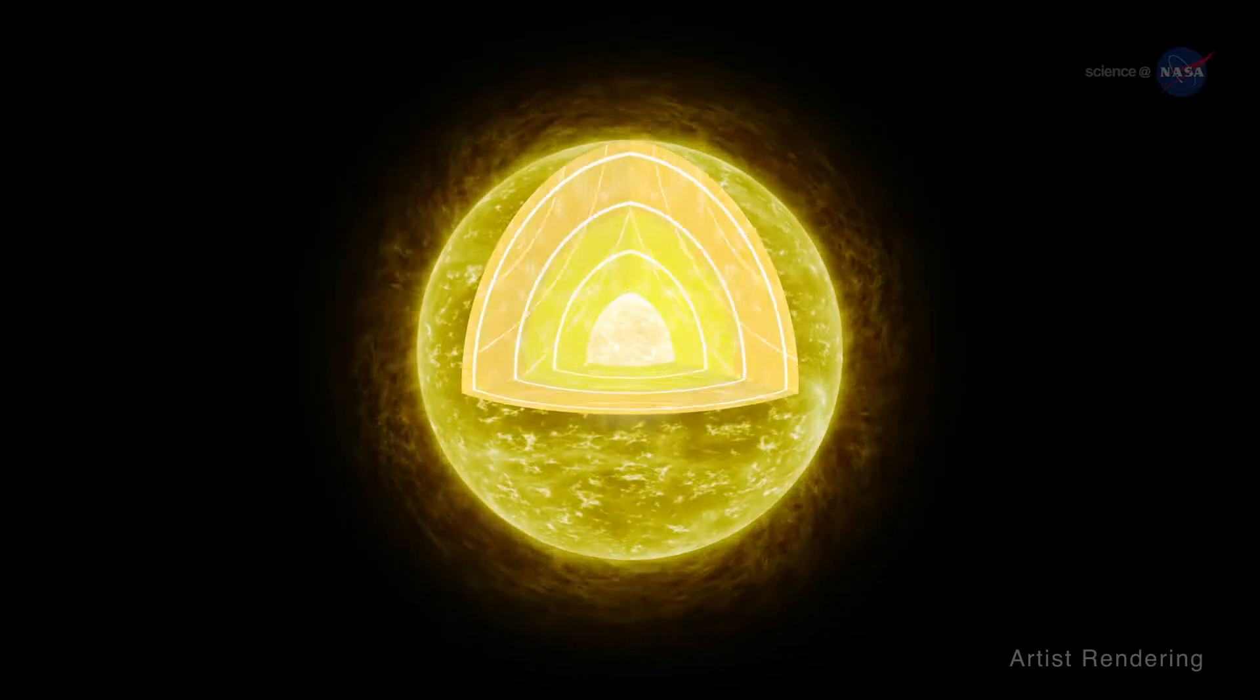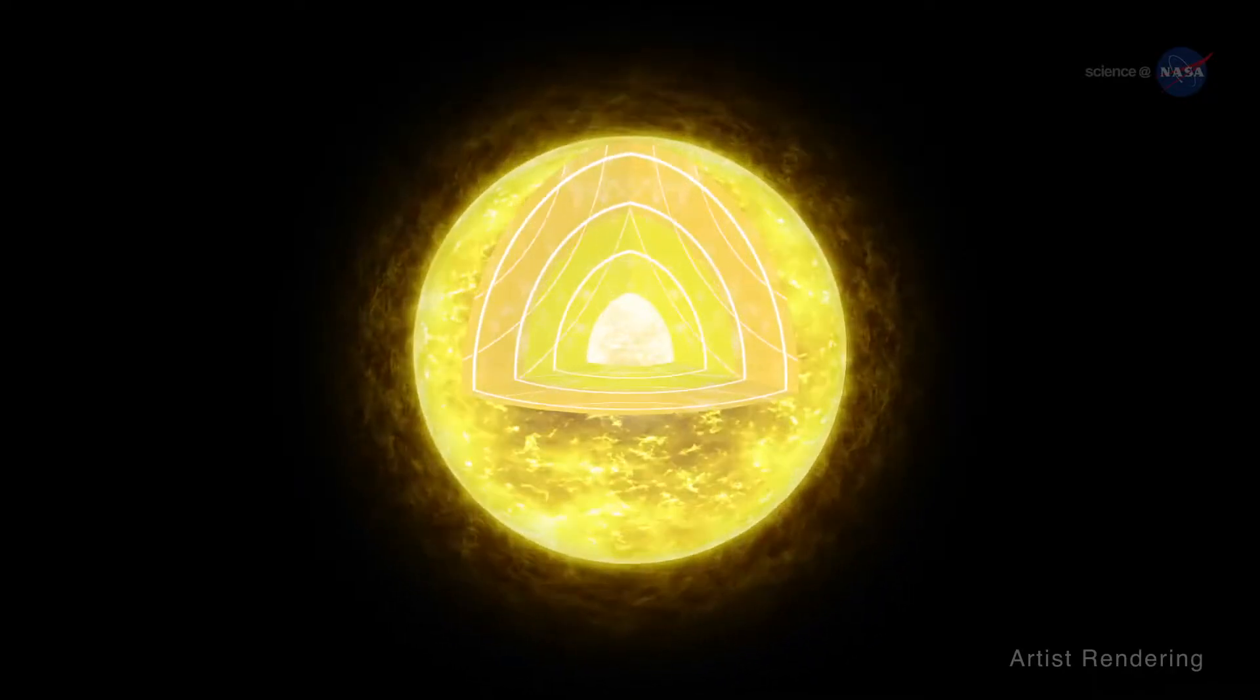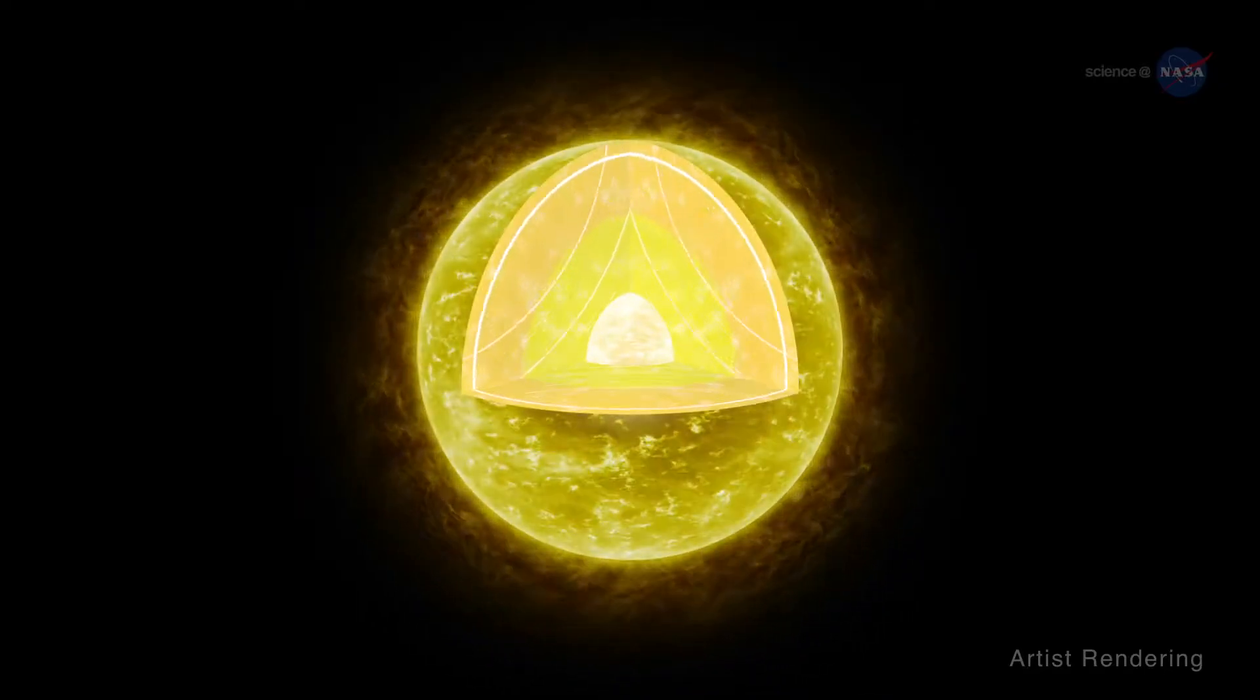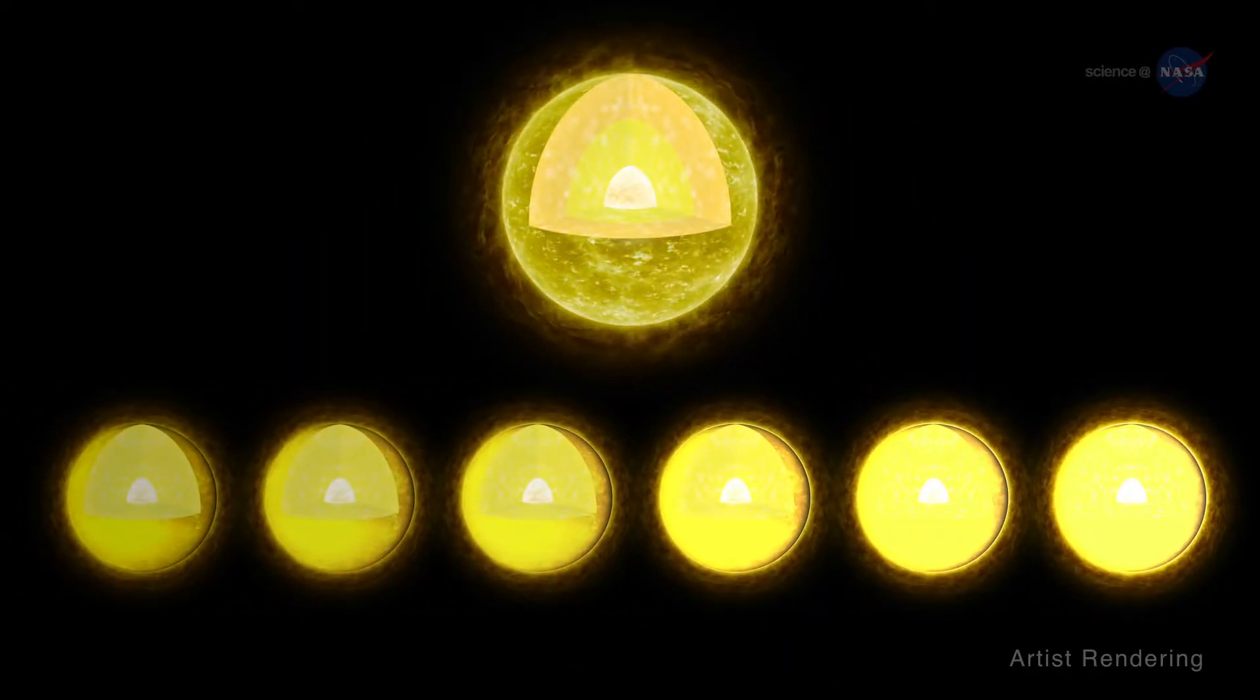Stars are rumbling, noisy spheres of hot gas. Sound waves bounce around the interior and cause the stellar surface to vibrate, much like the head of a drum. These vibrations reveal themselves as fluctuations in a star's brightness.